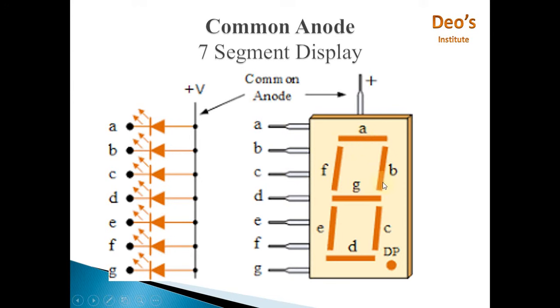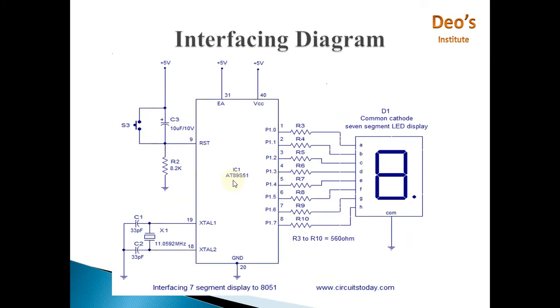Then A and B are on and rest all LEDs will be off because it is common anode. Positive end is connected to ground and negative end is open. That's why zero on the pin will activate the LED and one will deactivate the LED. This is how common cathode and common anode LED 7 segment display works.